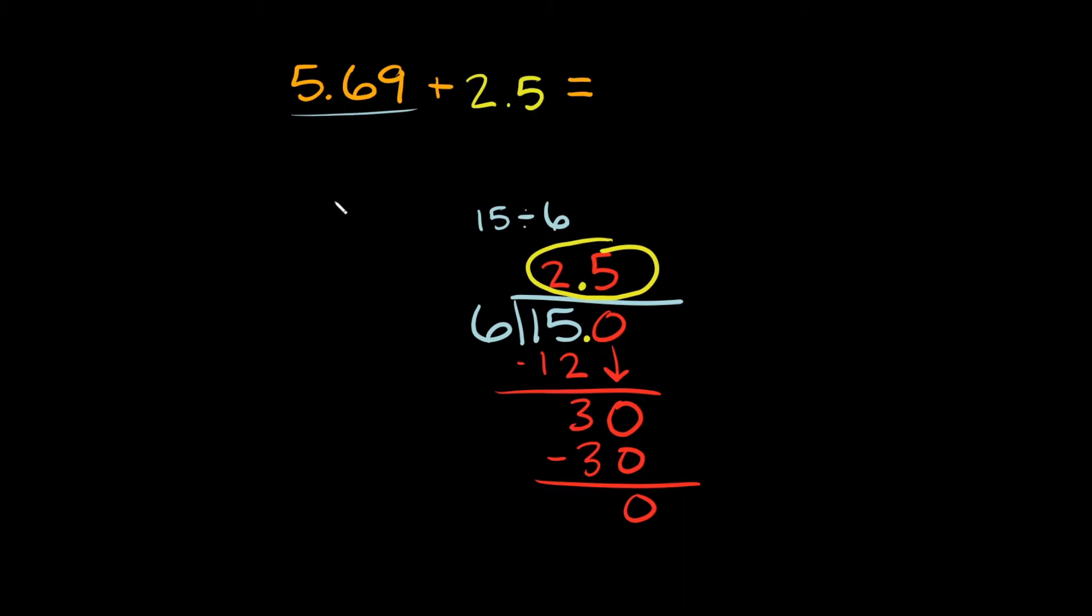So, I'm going to add them up, and remember, when you add decimals together, just write one number over the other, and make sure their decimals are aligned. So, I'm going to write it like this: 5.69 plus 2.5. So you can see I lined up their decimals, right? And all the other numbers are lined up too.